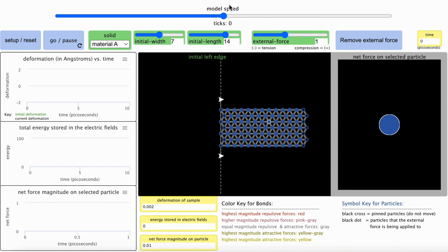You can select the magnitude and direction of the external force you apply to the solid along its left side using this slider. Negative values will apply a tension force, pulling on it to the left. Positive values will apply a compression force, pushing on it to the right. This external force will be applied to the solid when you press Go Pause to start running the model.